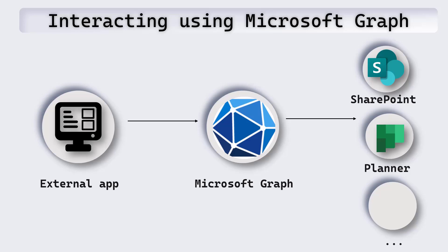Microsoft Graph verifies that everything with the external app is correct — that it has the required permissions, the client ID, secrets, and certificates. If all of that is okay, Microsoft Graph will get the data from Microsoft 365 and then pass that back to our external app.